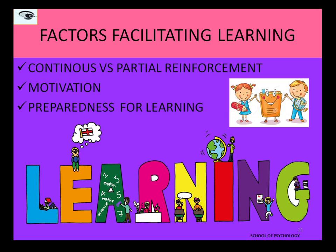You have to be literally genetically prepared for it — and that is essentially what biological preparedness is. Genetically you are prepared for it because there are so many things we tend to genetically inherit from our parents, and that probably will differ from person to person. So these were the three very important factors that facilitate learning. Thank you so much.